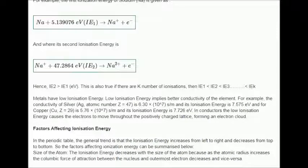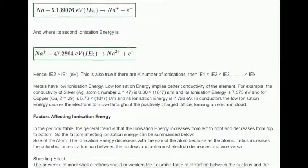Factors affecting ionization energy: In the periodic table, the general trend is that the ionization energy increases from left to right and decreases from top to bottom. So the factors affecting ionization energy can be summarized below. Size of the atom: The ionization energy decreases with the size of the atom because as the atomic radius increases the columbic force of attraction between the nucleus and outermost electron decreases and vice versa.